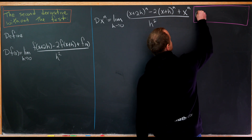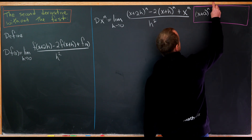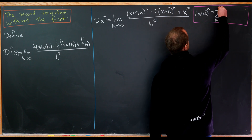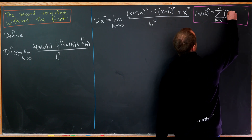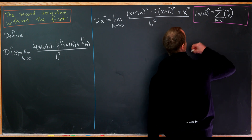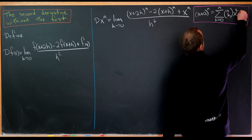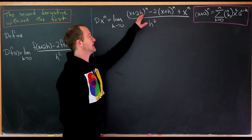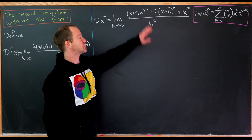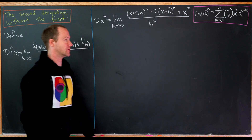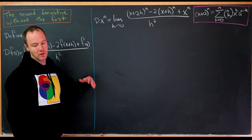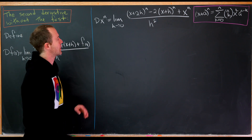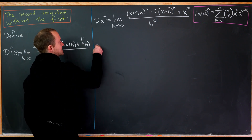Recall the binomial expansion: (x + a)^n expands as the sum from k = 0 to n of (n choose k) times x^k times a^(n−k). We'll apply this with a = 2h for the first term and a = h for the second term, grouping higher-order tail terms together.